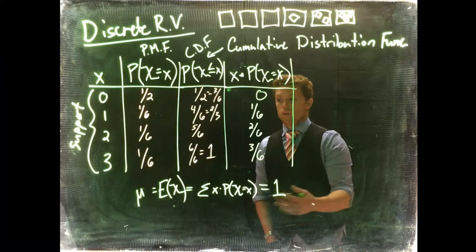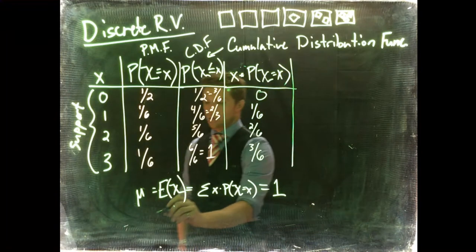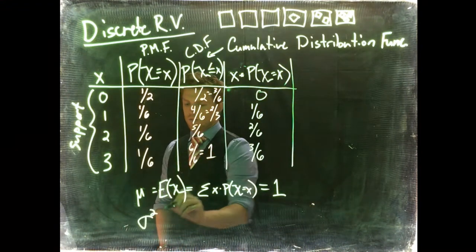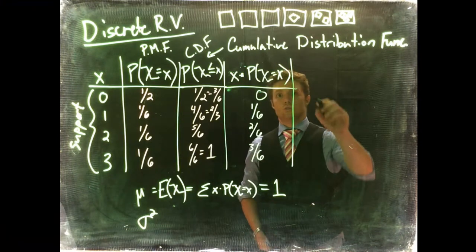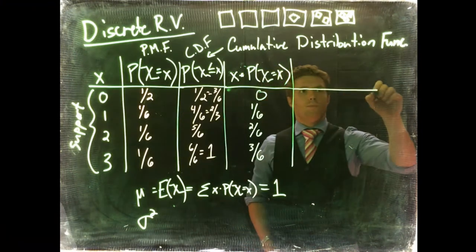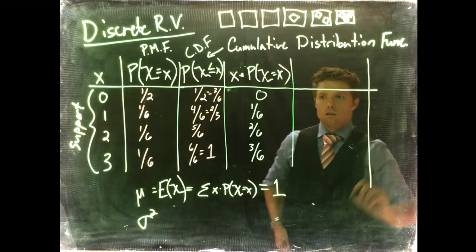Okay, and along with mu, a lot of times we also want to know what our variance is. And there's another thing that we can do to do this, we need to write up one more column.